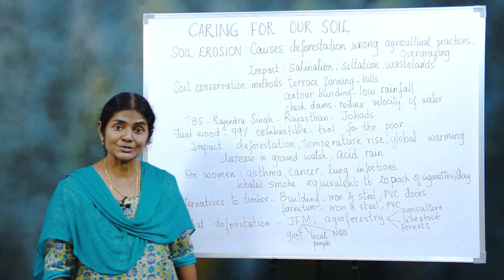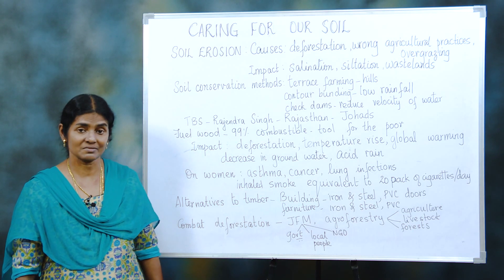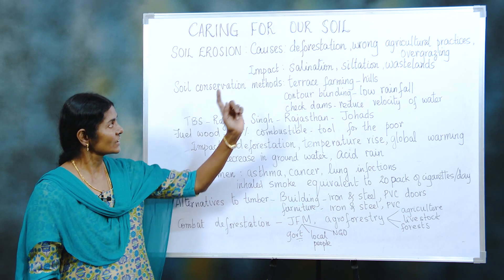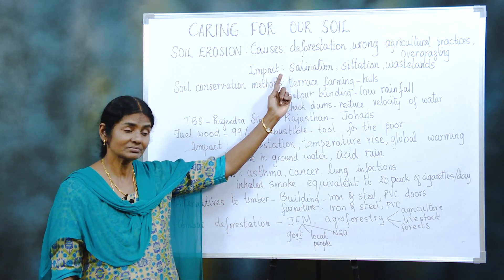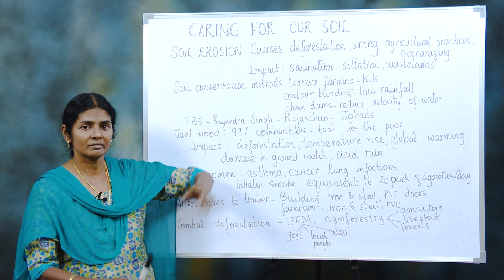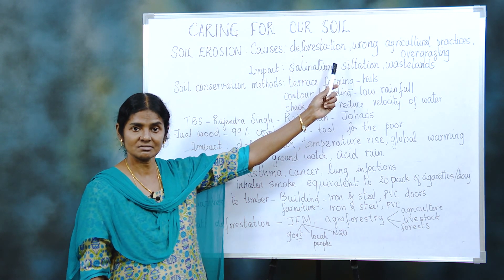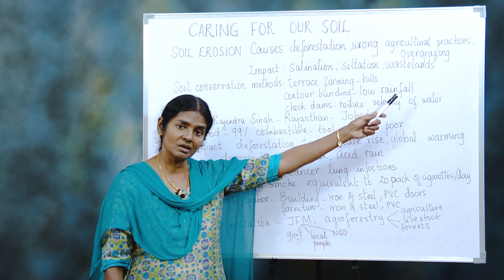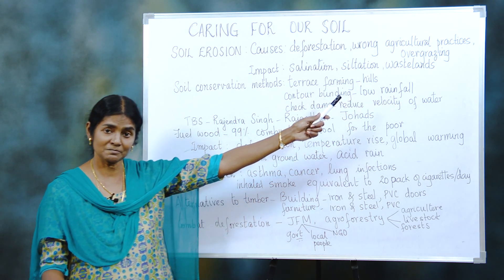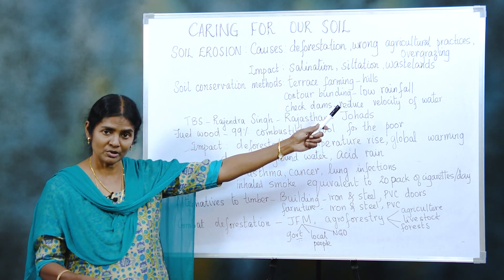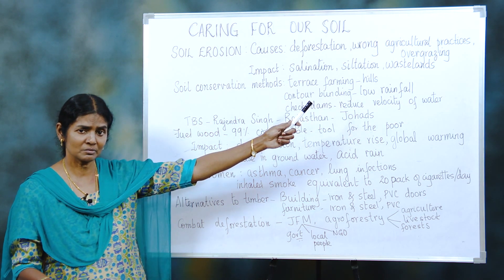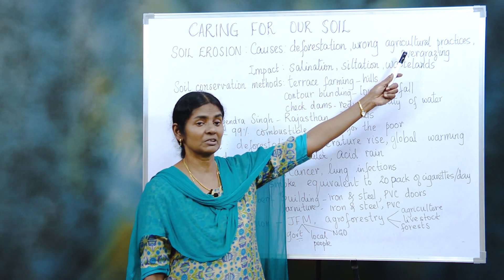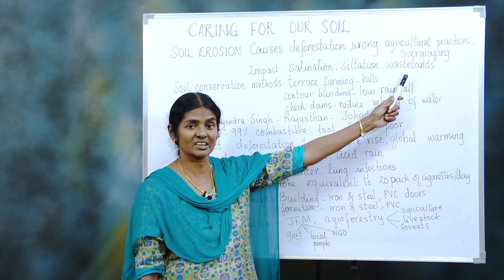First, what is soil erosion? The definition is very important. Soil erosion is the removal of the top layer of the soil. What are the causes? We have different causes we should know: deforestation, removal of trees, cutting down of trees, wrong agricultural practices — such as no crop rotation and no terrace farming — and all these come under wrong agricultural practices.